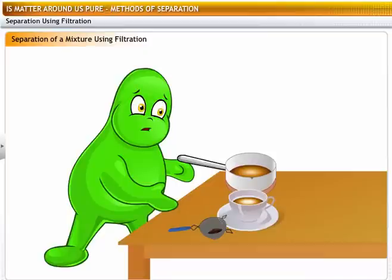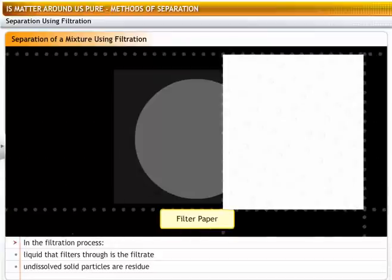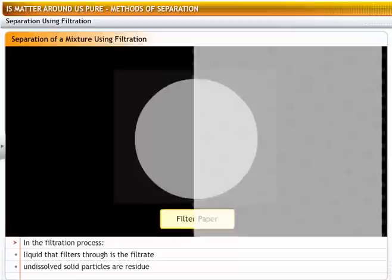Filtration is a process by which insoluble solids can be removed from a liquid by using a filter paper. A filter paper is a special type of paper which has pores that are tiny enough to let only liquids pass through it.